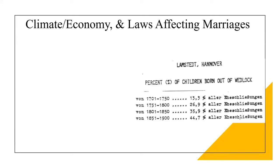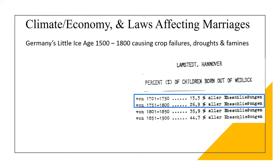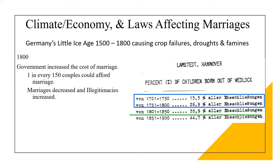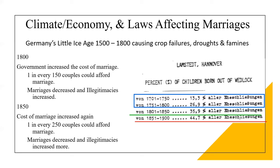We need to understand how climate, the economy, and laws affected marriages and illegitimacies. This chart shows the increase in illegitimacies between 1700 and 1800. Germany's Little Ice Age from 1500 to 1800 caused continuous inclement weather, more crop failures, and widespread famines — during this time there were fewer marriages and more illegitimacies. In 1800, the government increased the cost of marriage so that only one in every 150 couples could afford it — marriages decreased and illegitimacies increased. In 1850, the cost of marriage increased again so that only one in every 250 couples could afford it, and illegitimacies increased even more.